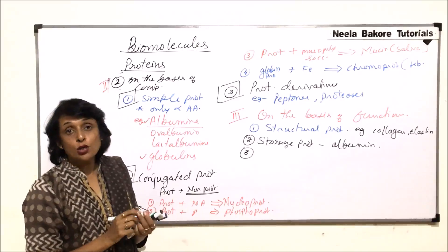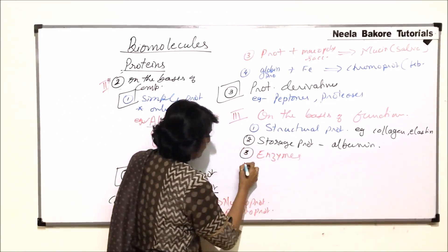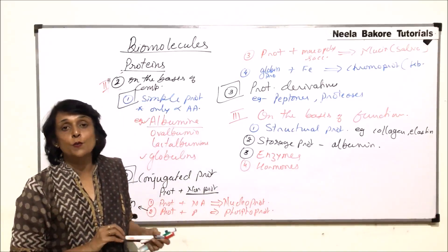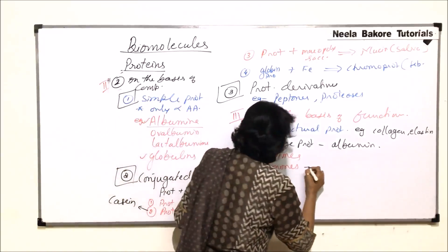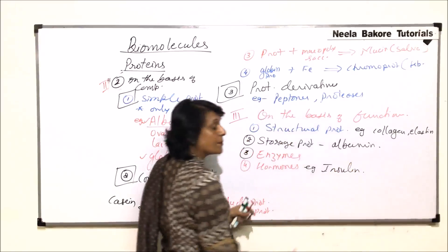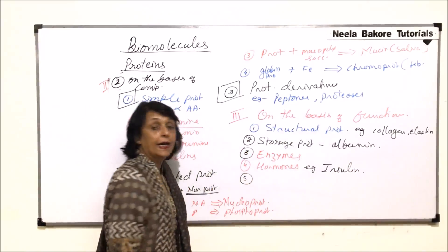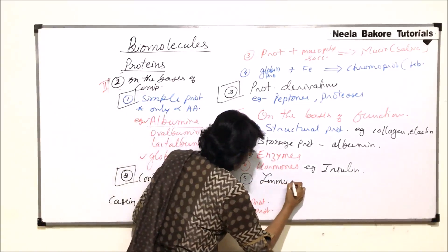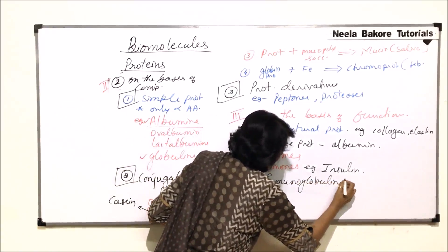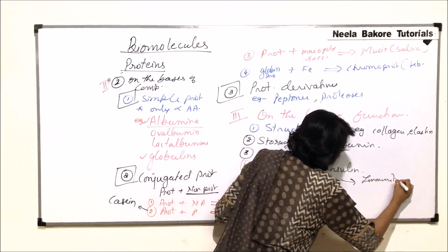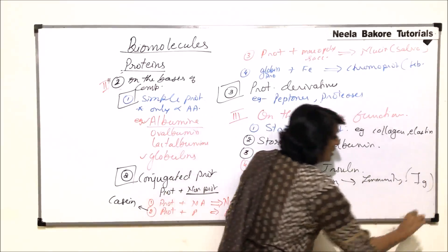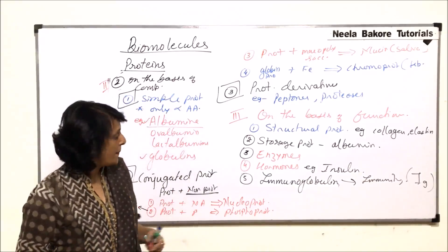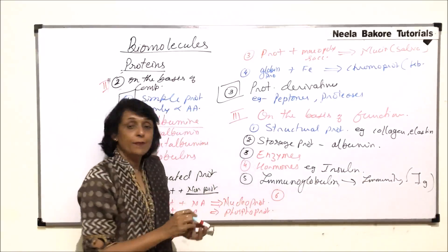Most enzymes are also proteins. Then there are hormonal proteins — not all hormones are proteins, but certain hormones are purely proteins or conjugated proteins. For example, insulin is a protein which acts as a hormone. Then there are immunoglobulins, where the proteins help us get immunity. There are various types of immunoglobulins — they provide immunity against various kinds of antigens or pathogens.